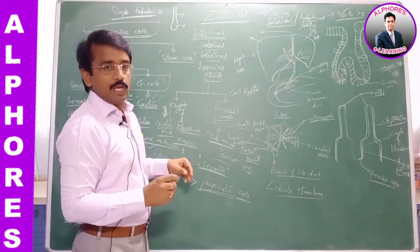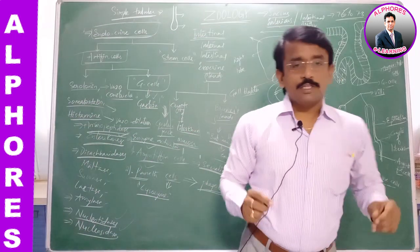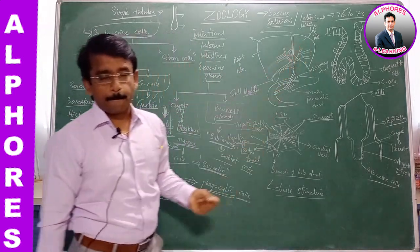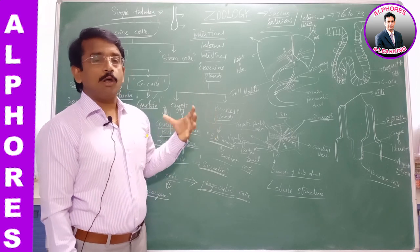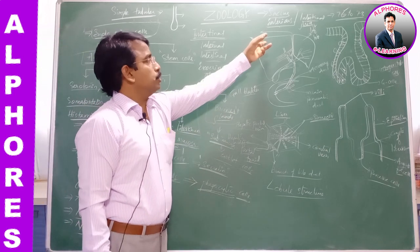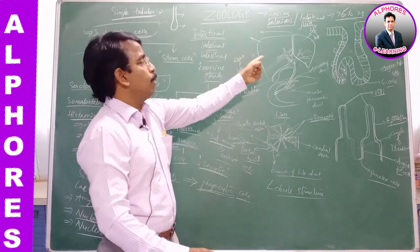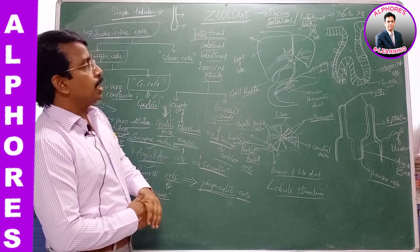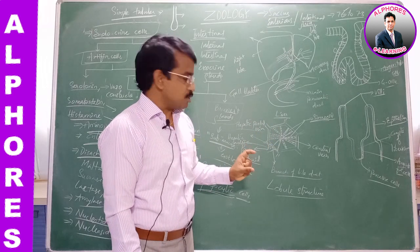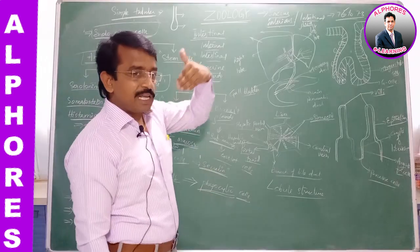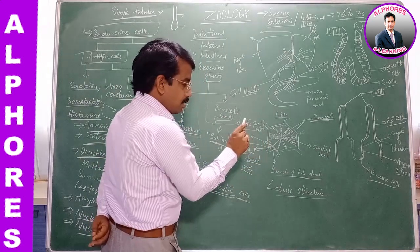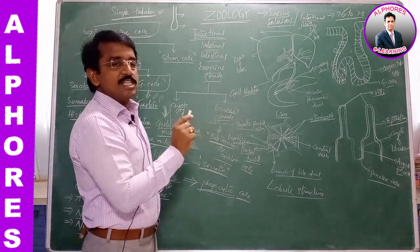The right lobe includes three lobes: the caudate lobe and two others, whereas the left lobe has only one. The right lobe is larger and the left lobe is smaller. Each lobe consists of structural and functional units which are named lobules — the hepatic lobules. Each lobe is further divided into these lobules.